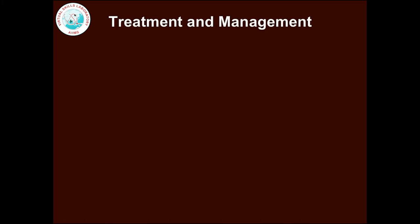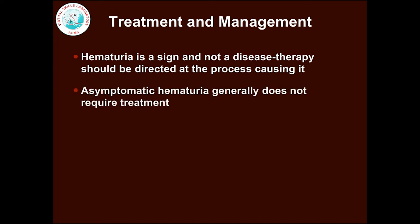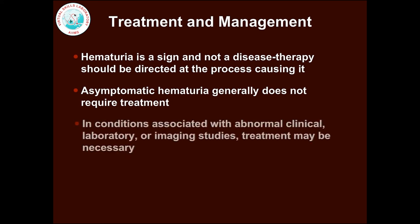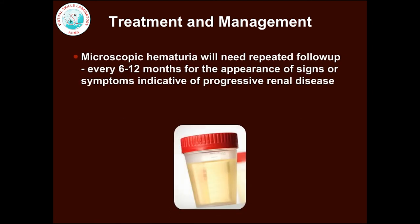Hematuria is a sign and not a disease; therefore, therapy should be directed at the underlying cause. Asymptomatic hematuria generally does not require treatment. In conditions associated with abnormal clinical, laboratory, or imaging studies, treatment may be necessary. Microscopic hematuria will need repeated follow-up every 6-12 months for the appearance of signs or symptoms indicative of progressive renal disease. If signs and symptoms are persistent, full urologic evaluation must be undertaken.